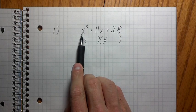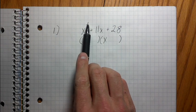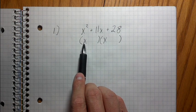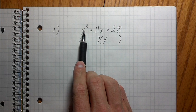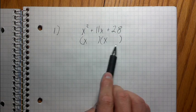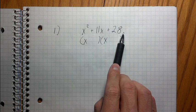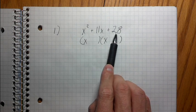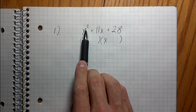This is the first term, this is the second term, and this is the third term. So the factors of the first term go here and here, because x times x is x squared. Remember that when we're factoring, what we're doing is reverse FOIL — instead of taking two binomials and multiplying them to make one expression, we're taking one expression and breaking it down into two binomials. So x times x is x squared.